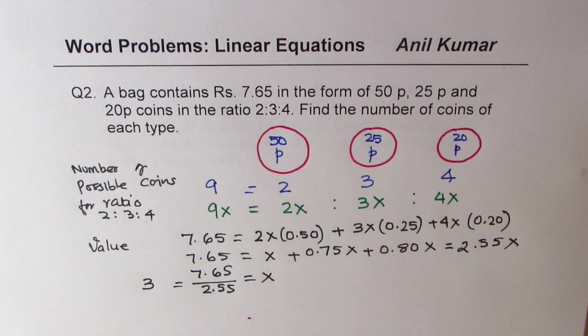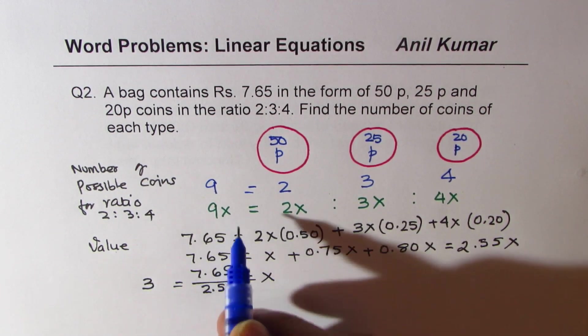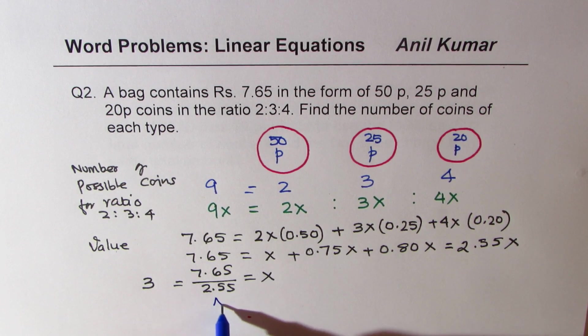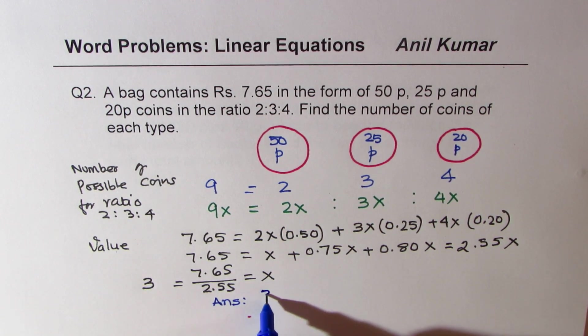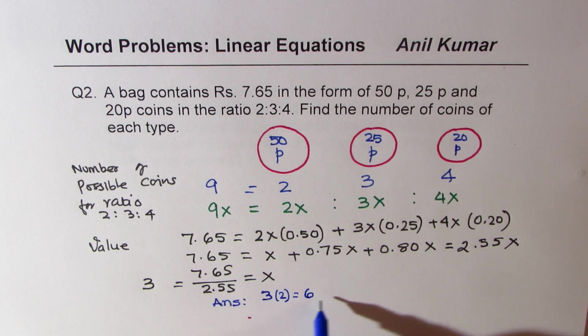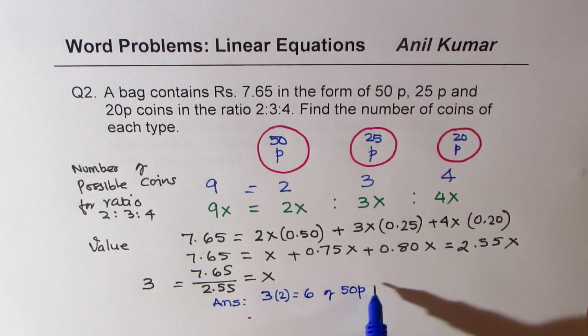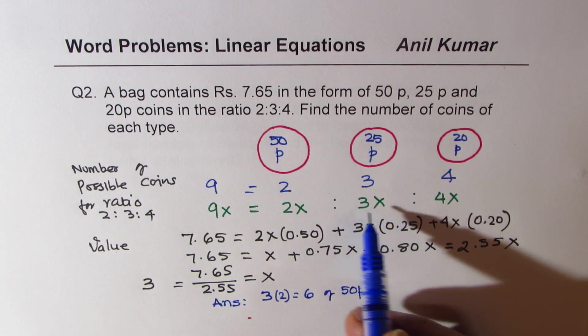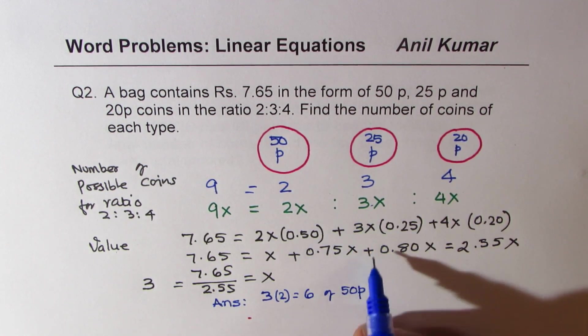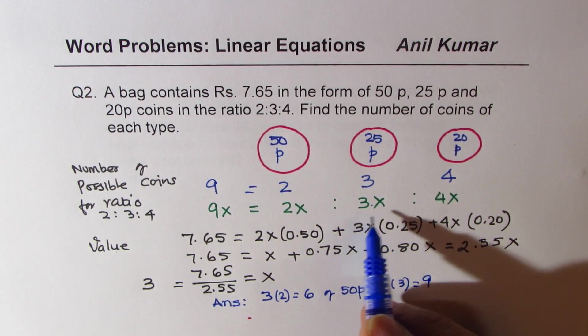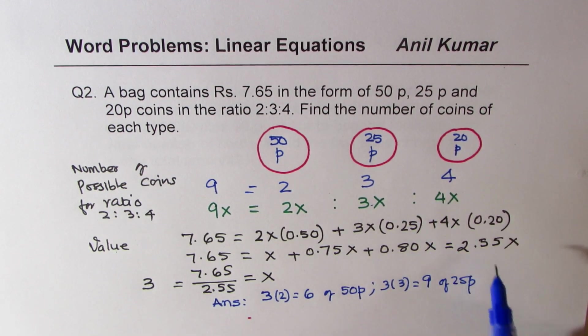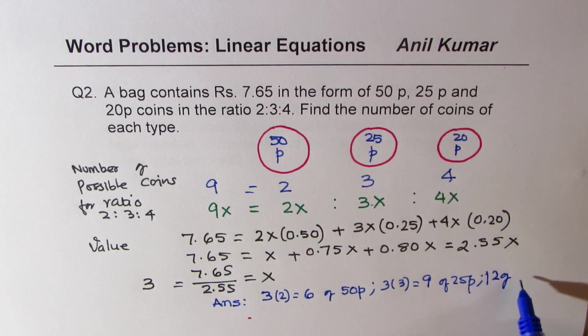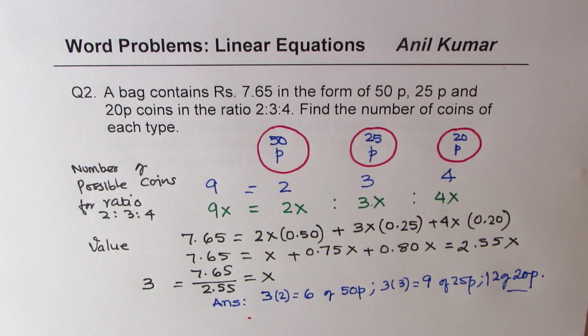If x is 3, then how many of each type? That's your question. Don't stop here. So x is 3. That means, let's write down the answer here. We'll have how many of 50 paisa? We'll have 3 times 2, which is 6, of 50 paisa. 3 times 3, we have 9 of 25 paisa. And 3 times 4, which is 12, of 20 paisa coins. Is that clear to you? So that is how it should be solved.